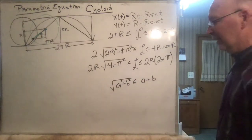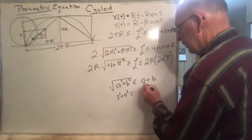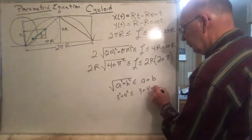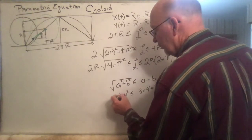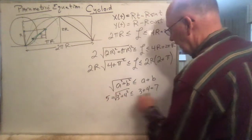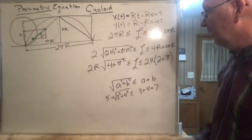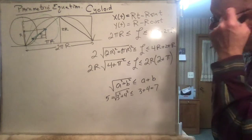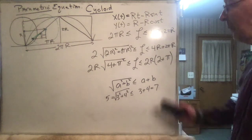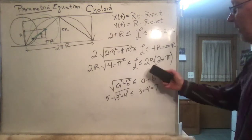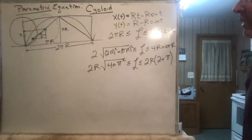Let's verify: take A=3, B=4. Then √(9+16) = √25 = 5, and 3+4=7. Indeed 5 ≤ 7. I think this is related to Jensen's Inequality from graduate-school analysis. So we have two boundaries. Can we get the exact value? Let's see if we can compute it.